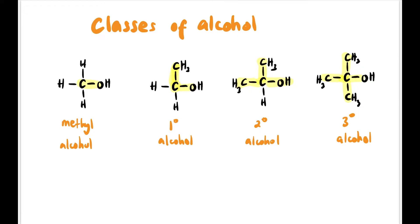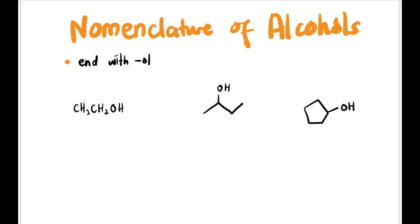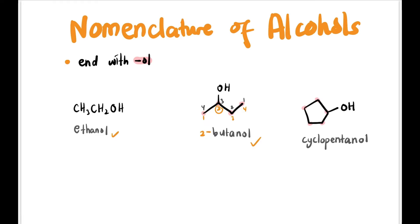Now let's learn the nomenclature of alcohol. The parent chain must end with '-ol'. For example, two carbons gives ethanol. Four carbons gives butanol — if the OH is at the second carbon, we call it butan-2-ol, choosing the lower locant. For a cyclopentane with an OH directly attached, we call it cyclopentanol.